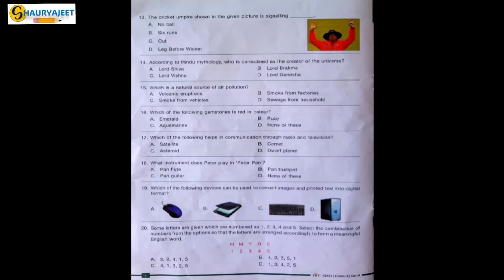Question 15: Which is the natural source of air pollution? Options are volcanic eruption, smoke from factories, smoke from vehicles, waste from households. Volcanic eruption is the correct option because all the other remaining options are man-made pollution.